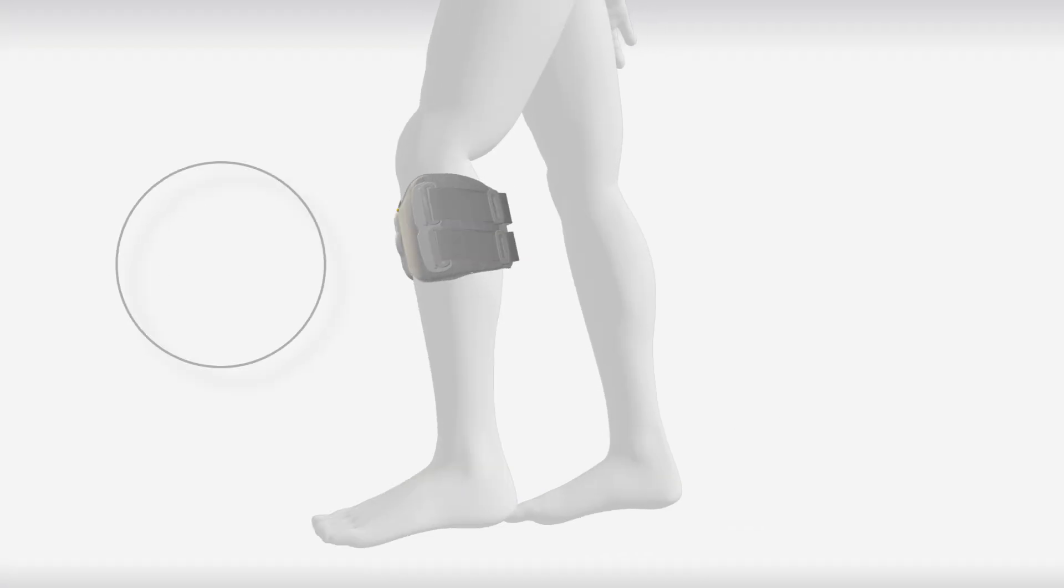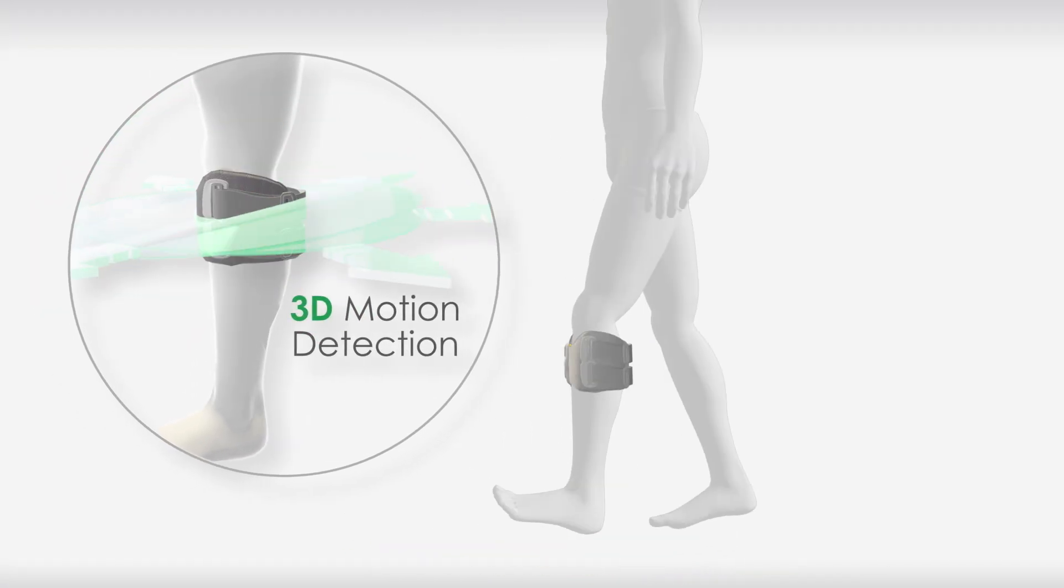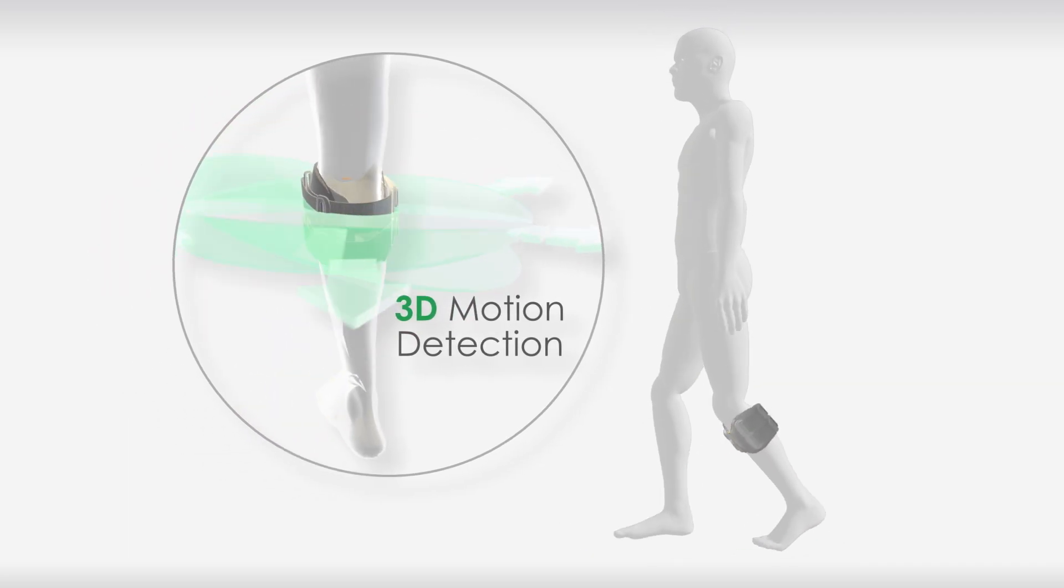Using an adaptive learning algorithm, the L300GO detects gait events, providing stimulation precisely when needed.